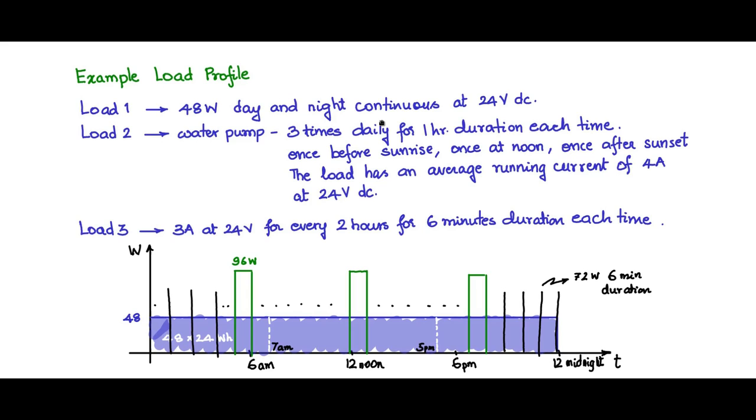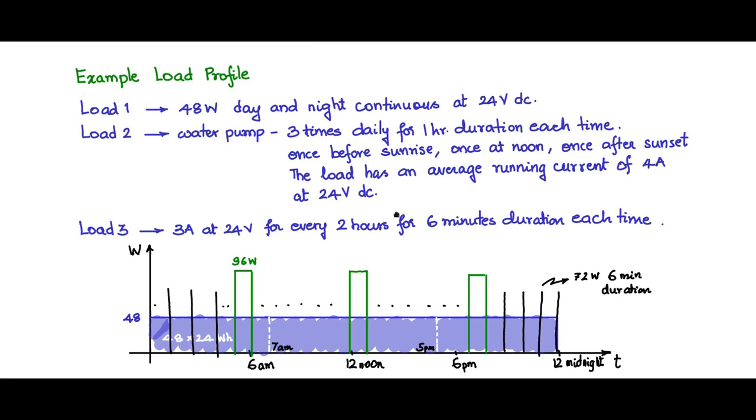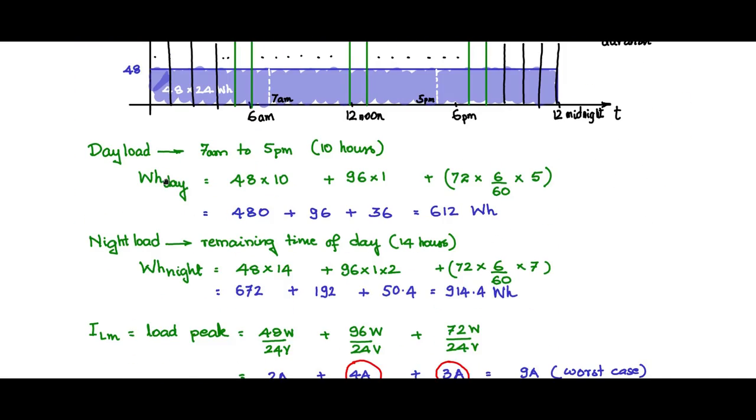For the example that we had discussed earlier, recall that it had three loads. Load 1 was a continuous 48 watt day-night load, 24 volt DC. Load 2 was a water pump, three times daily, one hour duration, again 24 volt DC. And load 3 was 3 ampere, 24 volts, every 2 hours, for 6 minute duration. We had the day load of 612 watt-hours and the night load of 914.4 watt-hours. Let us use this value for selecting the battery.